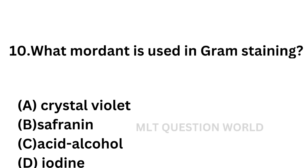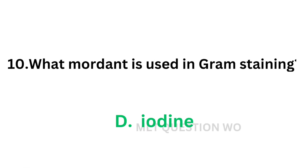Question number 10: What mordant is used in gram staining? Option A: Crystal violet. Option B: Safranin. Option C: Acid alcohol. Option D: Iodine. A mordant is the chemical which acts as the link between the cell wall and the dye. In gram stain, iodine is used, which forms a di-iodine complex that helps to retain the crystal violet stain in the cell wall. The correct answer is option D: Iodine.